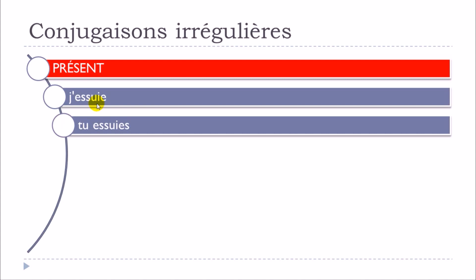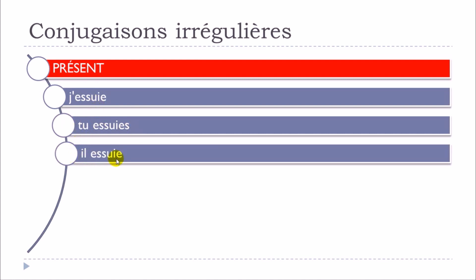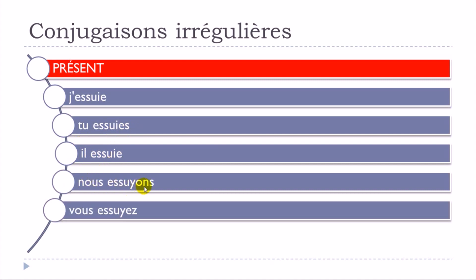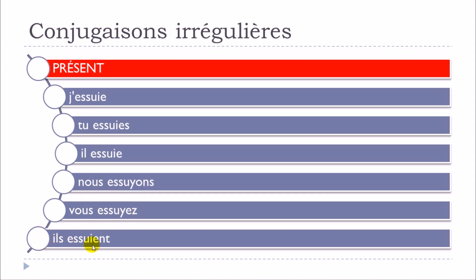J'essuie, tu essuies, il essuie, nous essuyons, vous essuyez, ils essuient. If you look carefully, you can see that for the first form, this Y is changing and now it's I — same thing for tu and il, and then the same for ils. For nous et vous, it does respect the rule for the first group, so you just put Y and then the ending. But keep in mind that for je, tu, il, and ils, this Y will be changed and replaced by I.